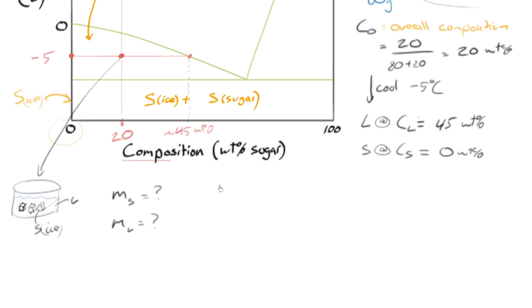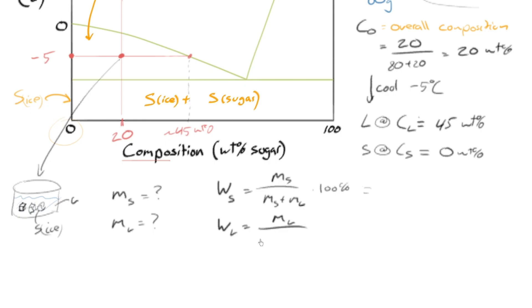We could also express it as a fraction. We could say: what's the weight fraction that is solid? That would just be the mass of the solid divided by the total mass — which is the mass of the solid plus the mass of the liquid. We could multiply that by 100% and end up with something in weight percentage. We could also define the weight fraction of the liquid in a similar manner: mass of the liquid divided by the total mass. Noting that the weight fraction of the solid plus the weight fraction of the liquid has to equal one, since there are only two phases: solid and liquid.